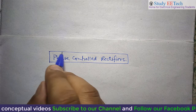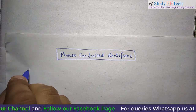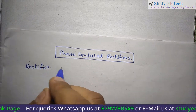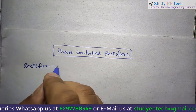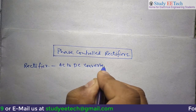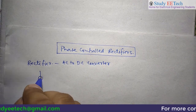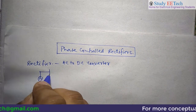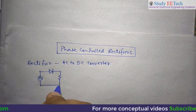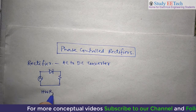Exactly before coming to the concept of Phase Controlled, we will start from the Rectifier, which is quite known to us. We know that the rectifiers are AC to DC converters. And we know that an alternating voltage source with a diode and the load connected — this circuit we call a half-wave rectifier.